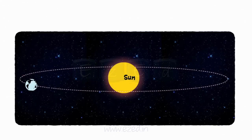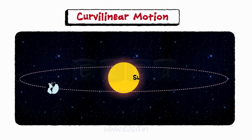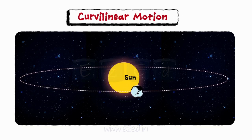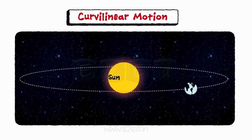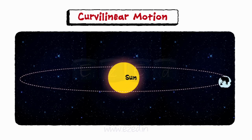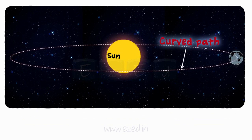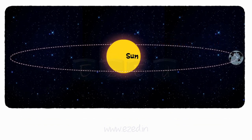Let us first understand curvilinear motion with the help of an example. Our solar system is the best example of curvilinear motion. Here, every planet is revolving around the sun — that is, they travel along a curved path performing curvilinear motion.